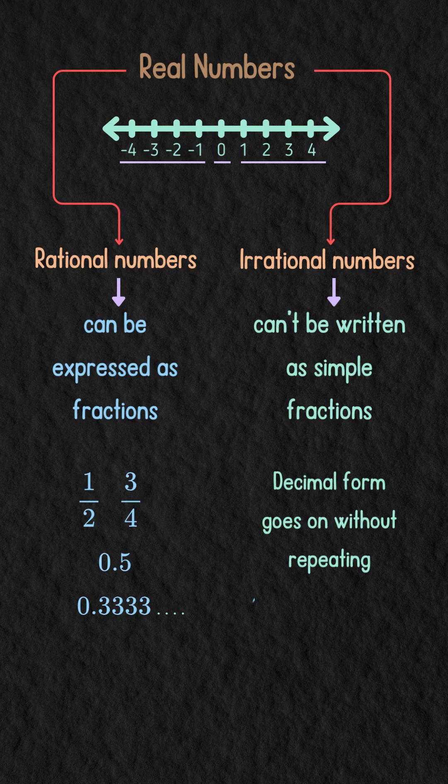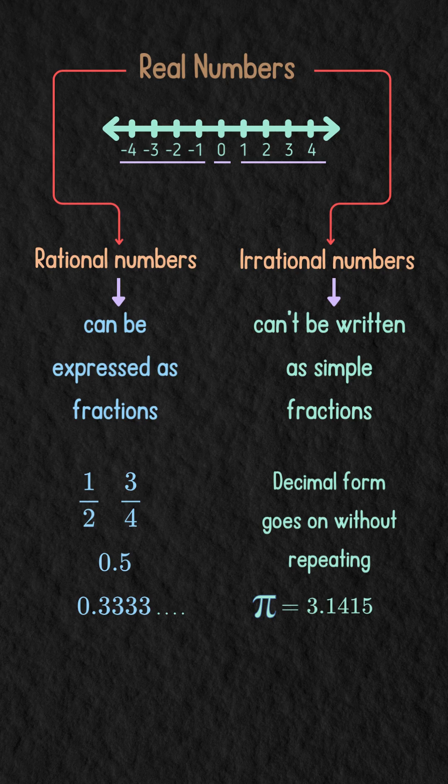You must have heard of pi, which starts as 3.1415 but goes on forever and doesn't have any pattern. Pi is an example of an irrational number.